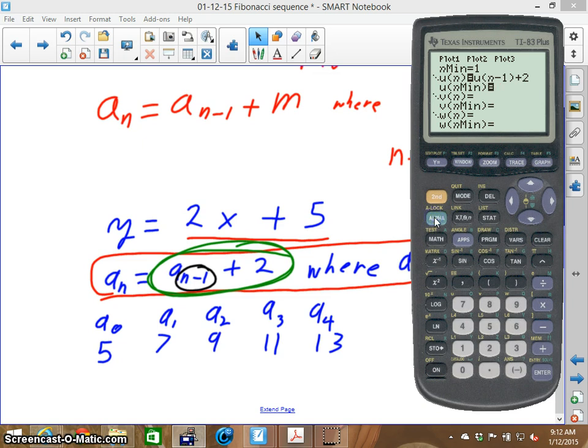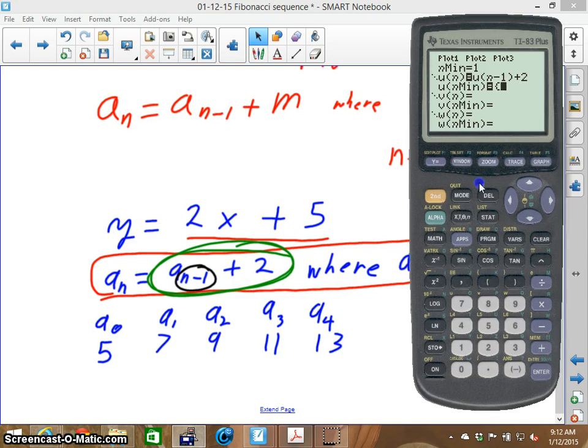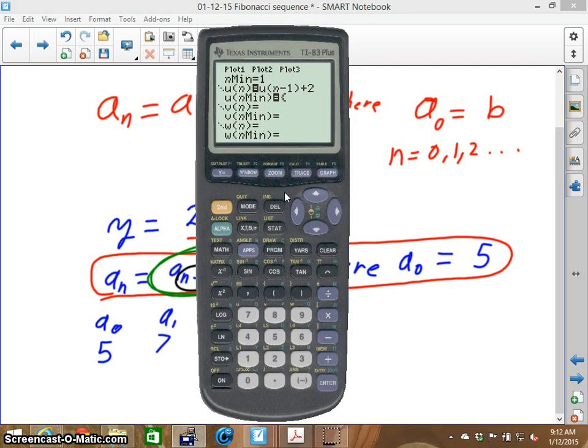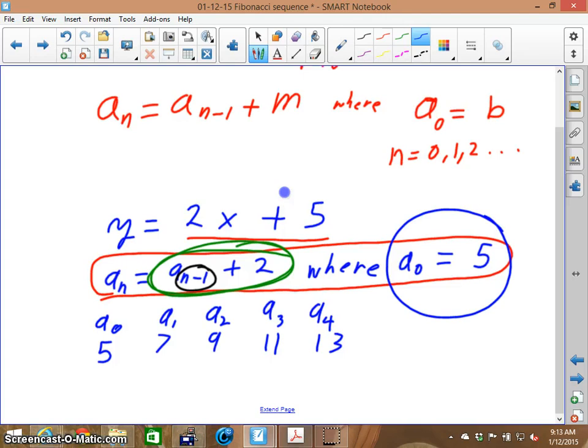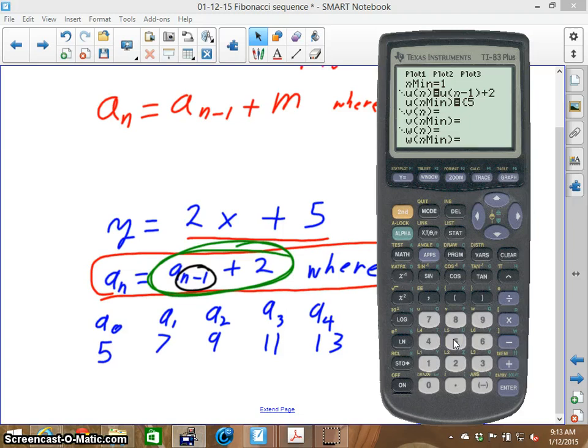So, we hit alpha, oh, not alpha, but second parentheses, and it brings up the bracket. And then we just type in the first number that we're going to be using. Now, remember, a sub 0 is equal to 5. So, we're going to be starting at 5.